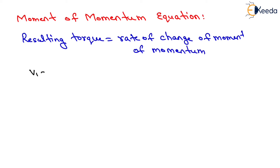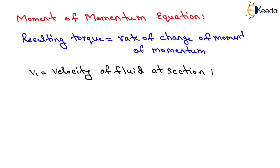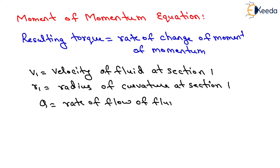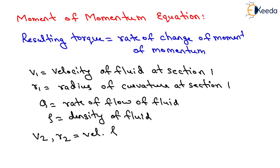Let V1 be the velocity of fluid at section 1, R1 be the radius of curvature at section 1, and Q be the rate of flow of fluid. Rho will be equal to the density of fluid, and V2 and R2 will be equal to the velocity and radius of curvature at section 2.